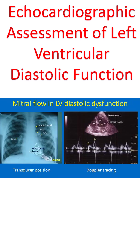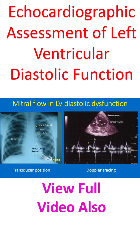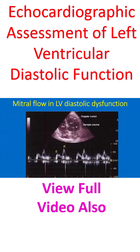Doppler interrogation of the mitral valve is usually done from the apex through the apical 4-chamber view. The transducer is placed directly over the apex beat and the echo beam is directed upwards. A good 4-chamber view of the heart is obtained, showing all 4 chambers and both atrioventricular valves. The Doppler cursor is then aligned along the long axis of the left ventricle passing through the mitral valve.